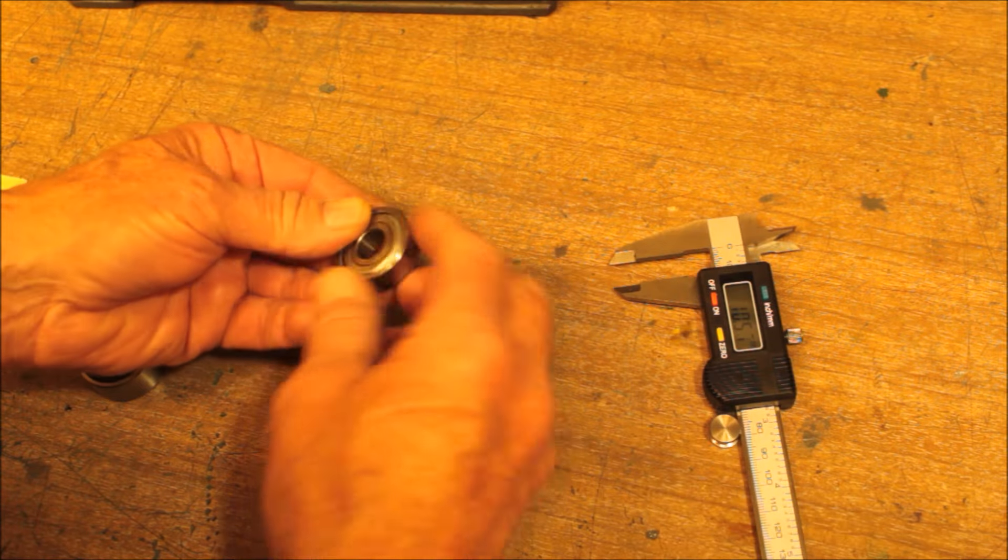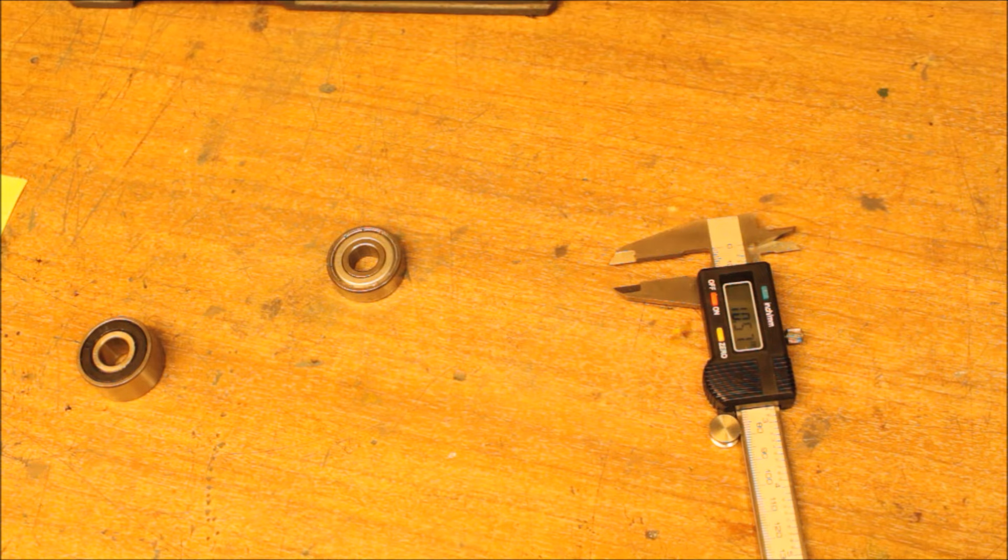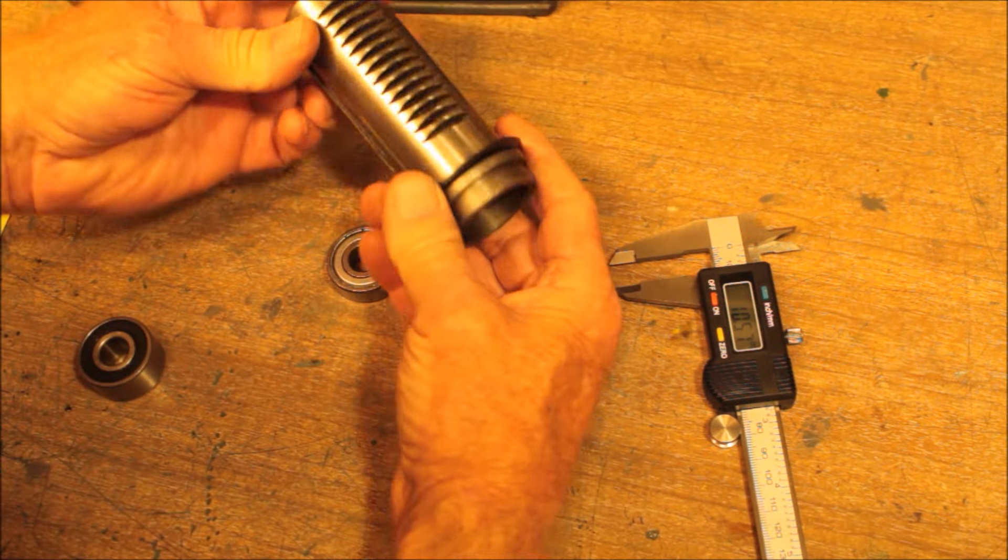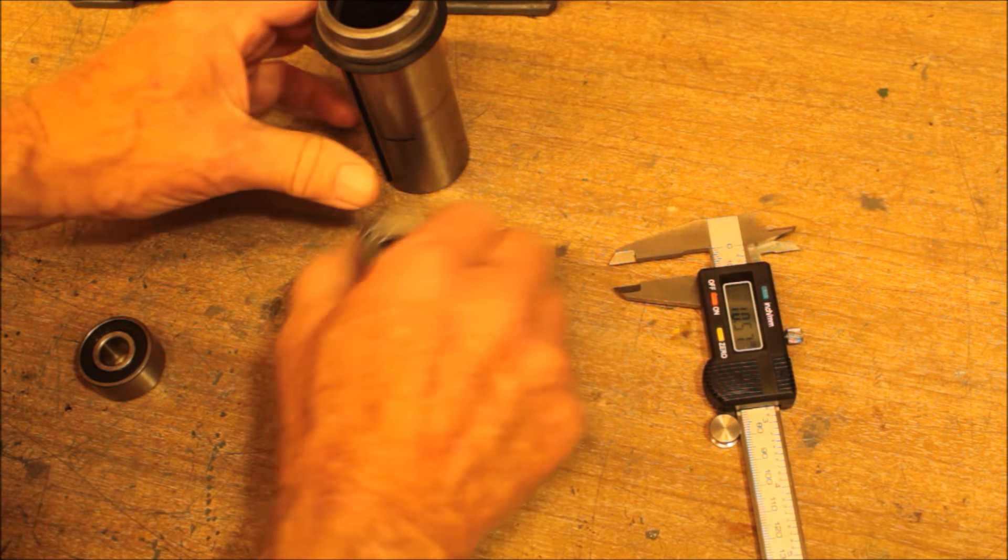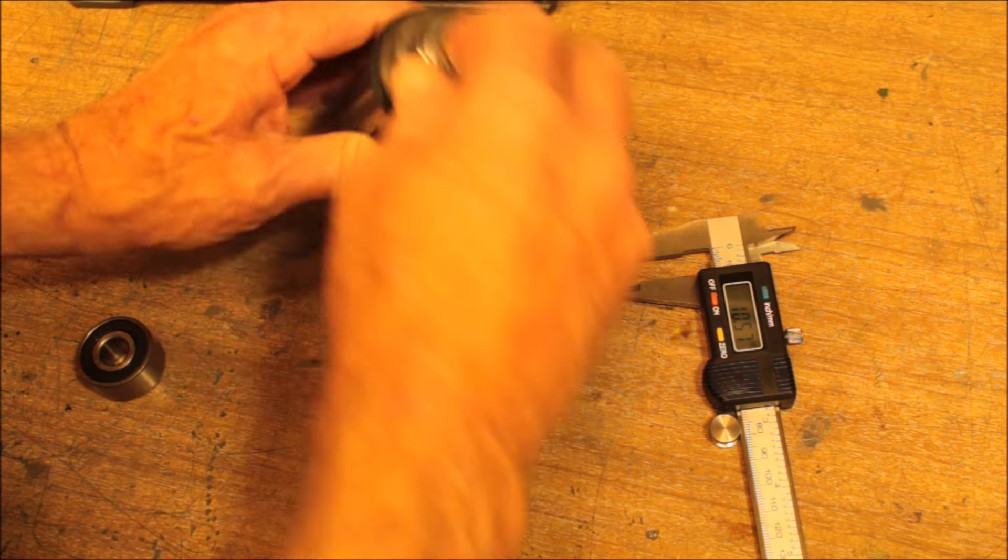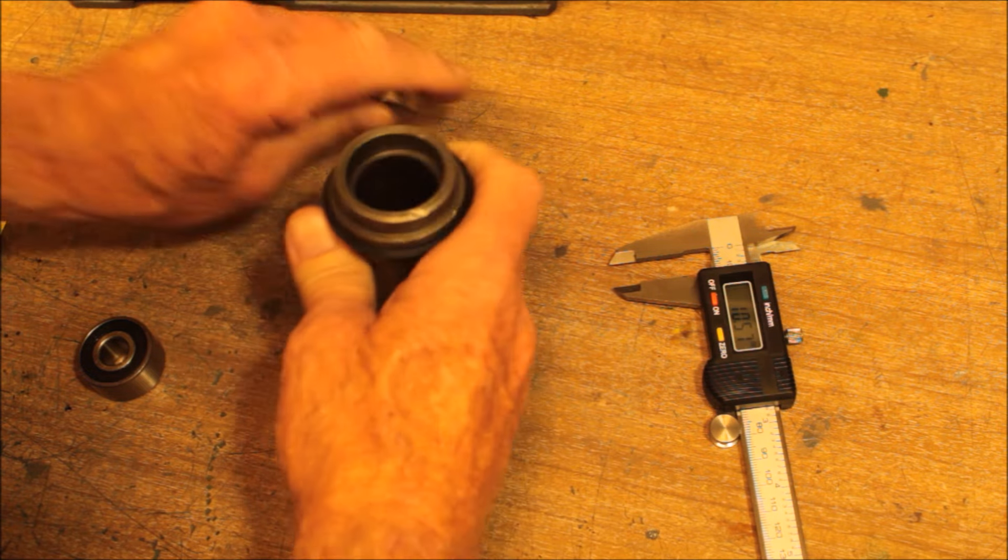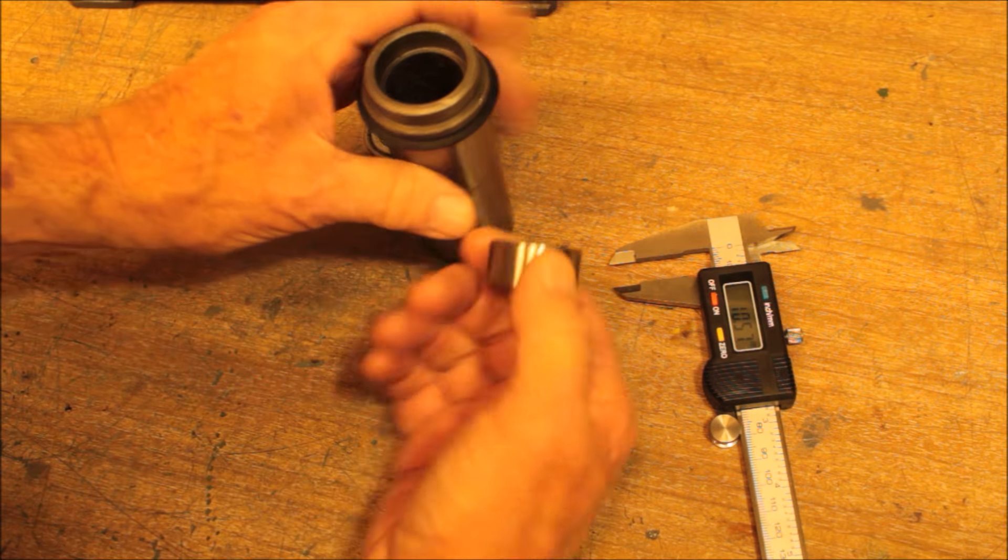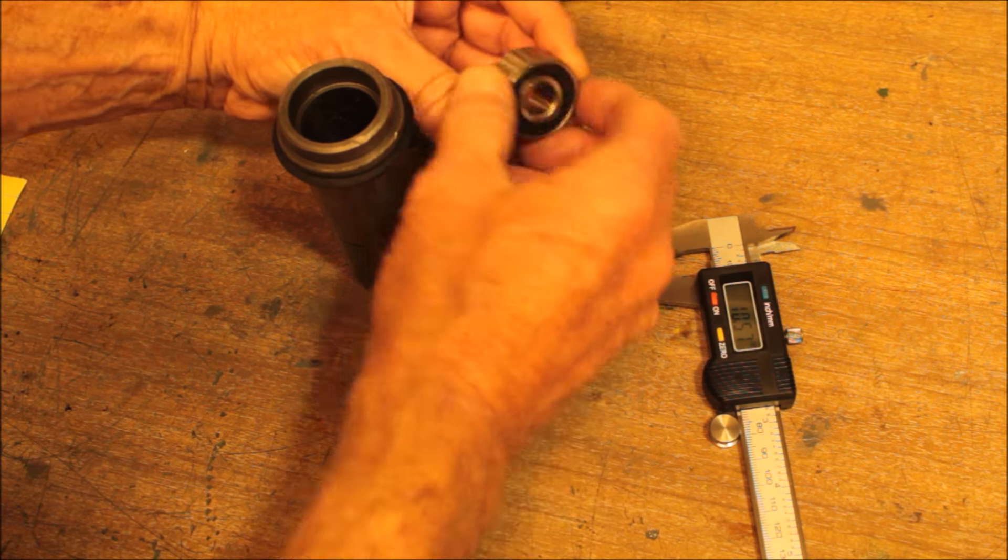Okay, this is the old spindle bearing. It goes inside this, this is the quill from the drill press, slides right in there. It's not a real tight fit but it's tight enough. This is the replacement bearing, this is a bearing that can take more lateral thrust.